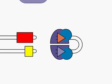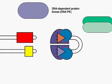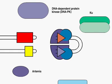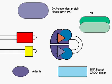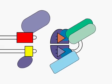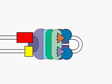Additional proteins — DNA-dependent protein kinase, Ku, Artemis, and a dimer of DNA ligase and XRCC4 — are incorporated into a large complex with the RAG proteins.